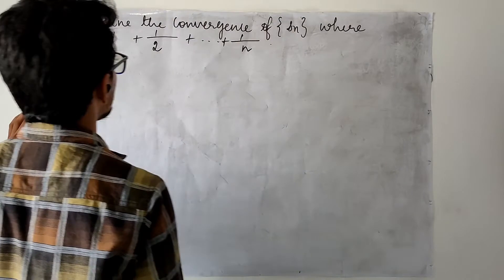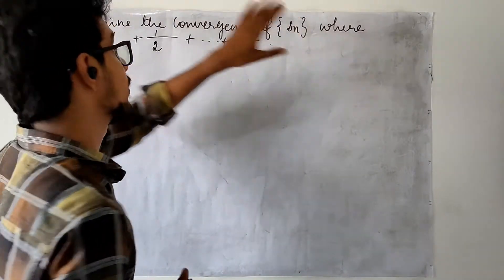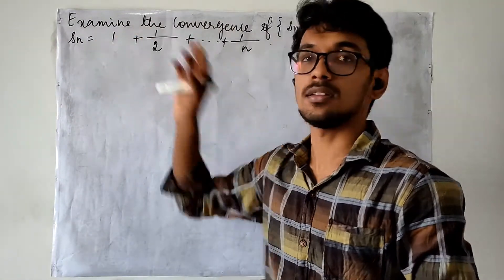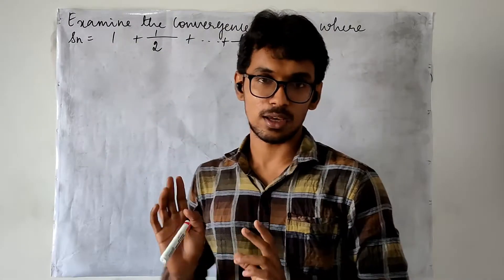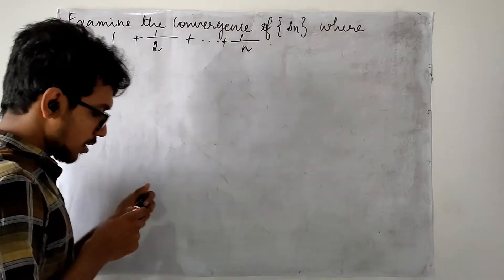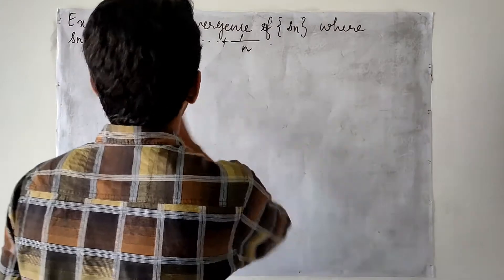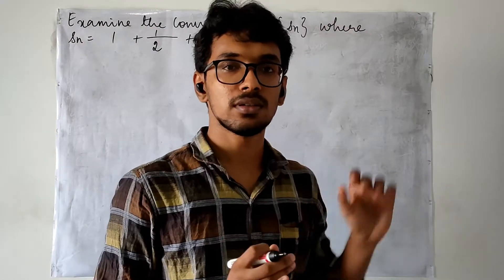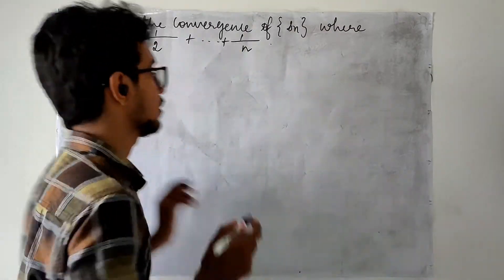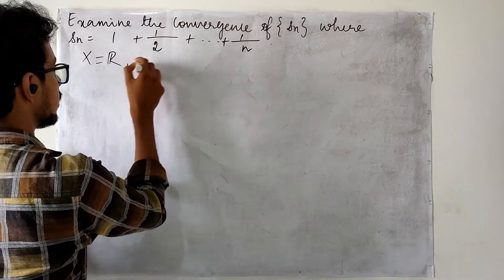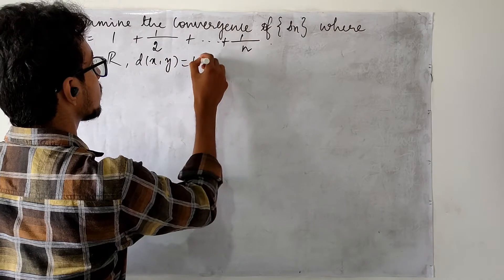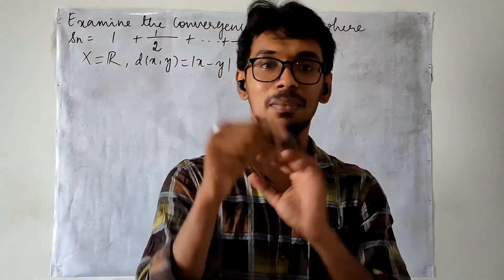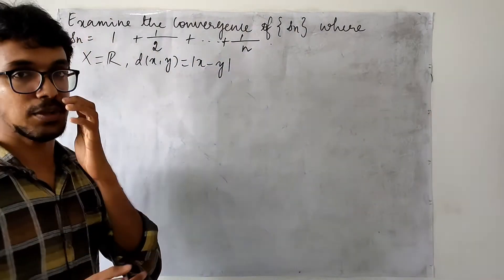Here first we are going to examine the convergence of the sequence Sn where Sn is defined in this sense. The sum of these terms is considered to be the single element in the sequence. Nothing is specified and we may easily notice that these are some real numbers, hence we are talking about the convergence of this sequence in the set of real numbers. The metric space considered here is the space of real numbers with standard Euclidean metric, so I will directly make use of the absolute value.